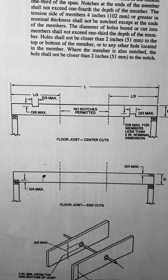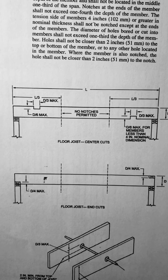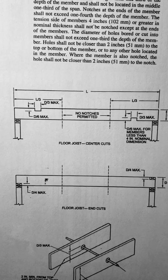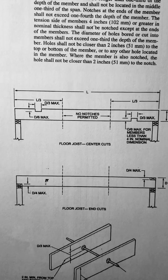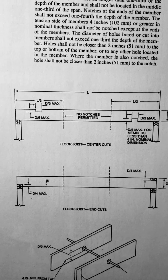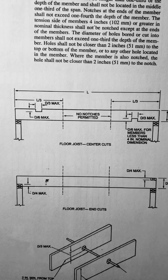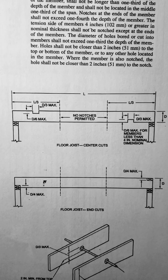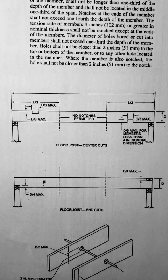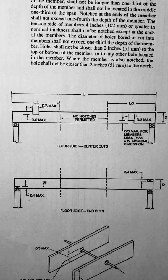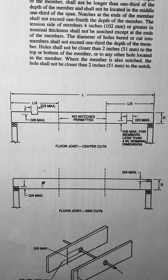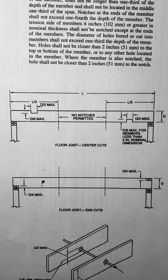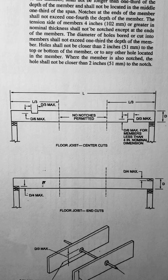It says the depth divided by 6 max for members less than 4 inches nominal dimension. You've got that same 1 sixth figure, but you're really not allowed to do any notching unless it's at the ends of the joist for a framing member less than 4 inches nominal dimension.